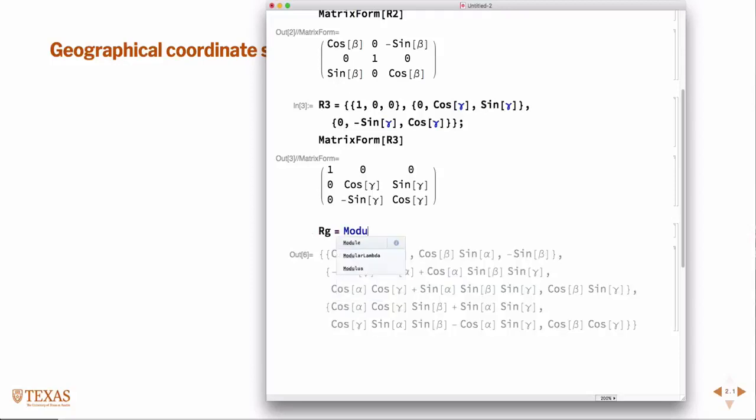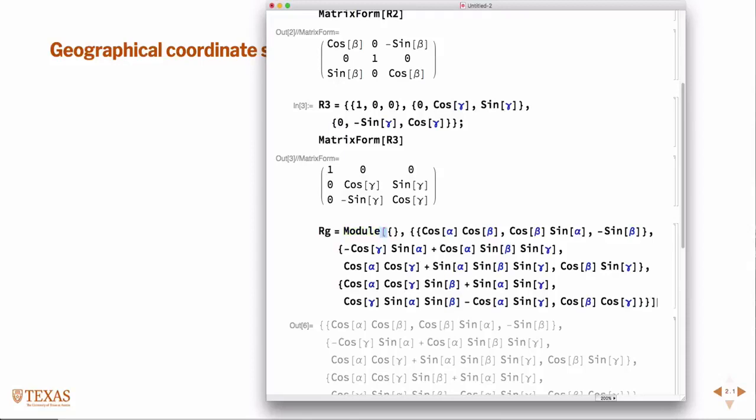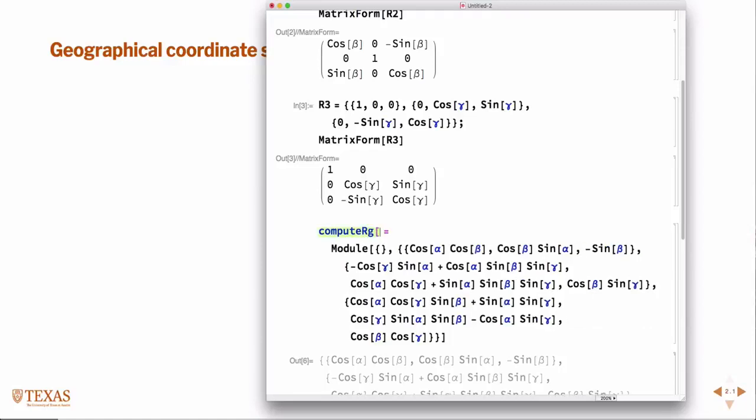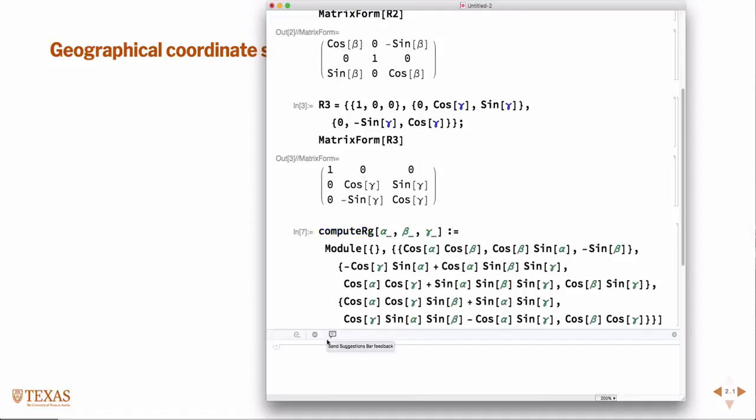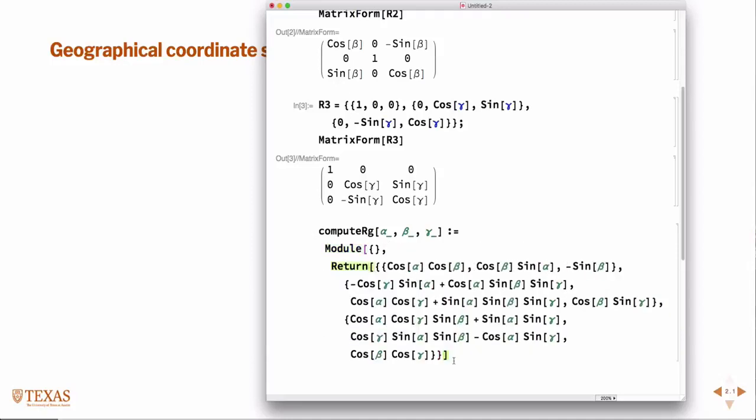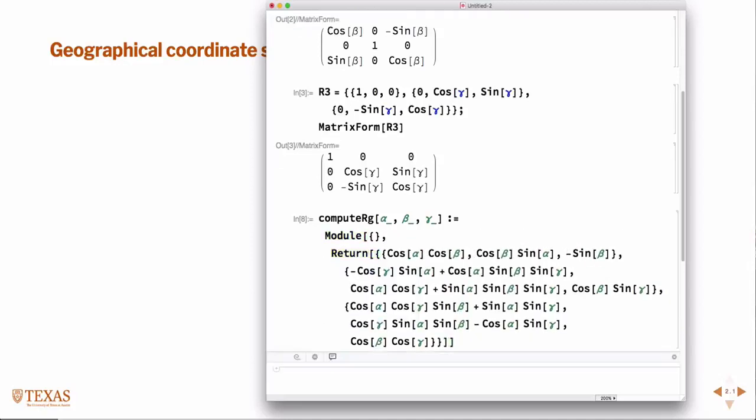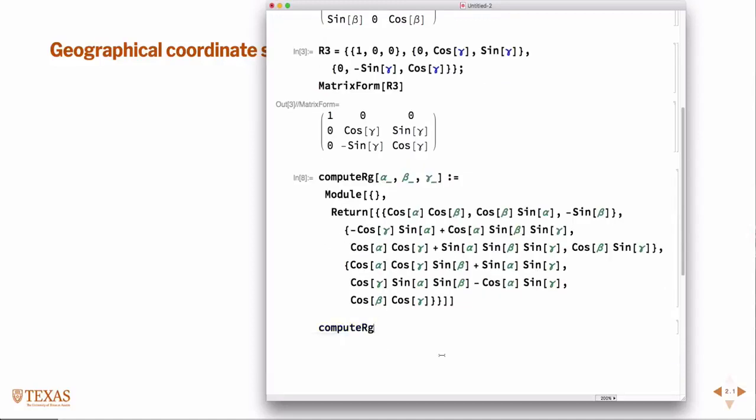So in Mathematica the syntax for functions is module. We're going to make a module called compute RG that takes the arguments alpha, beta, gamma, and returns this thing. So now, just like that I have a function that will never make a mistake.